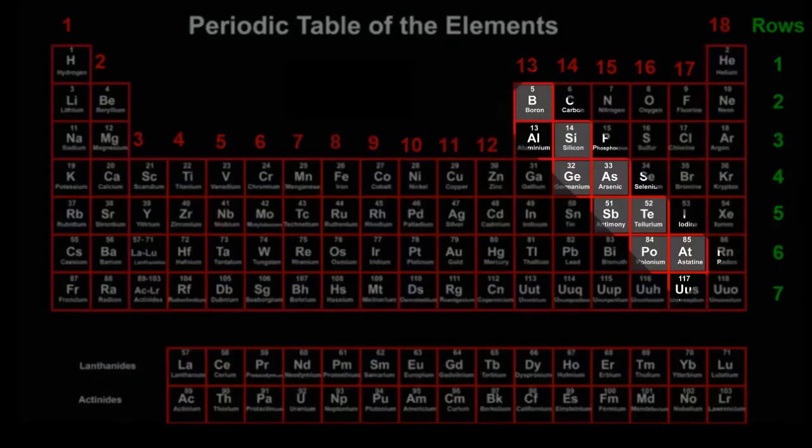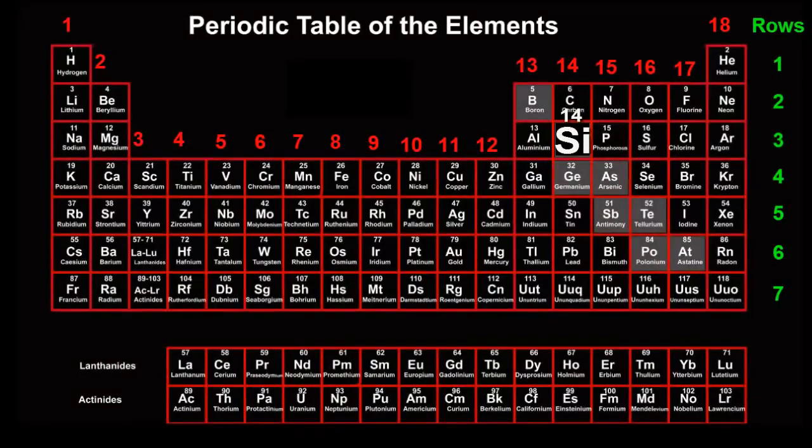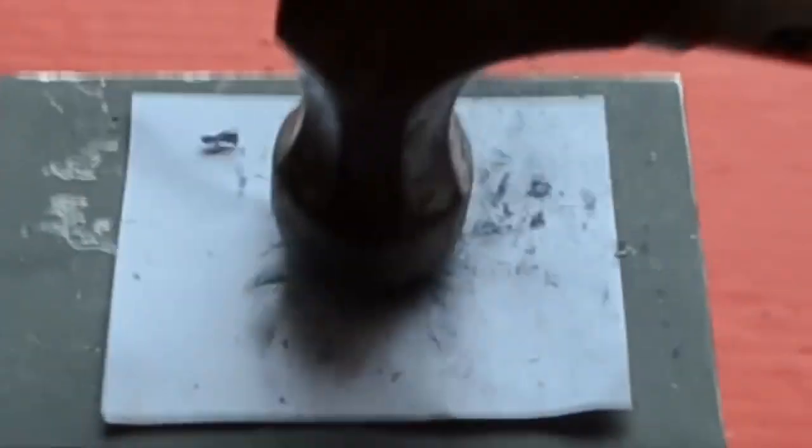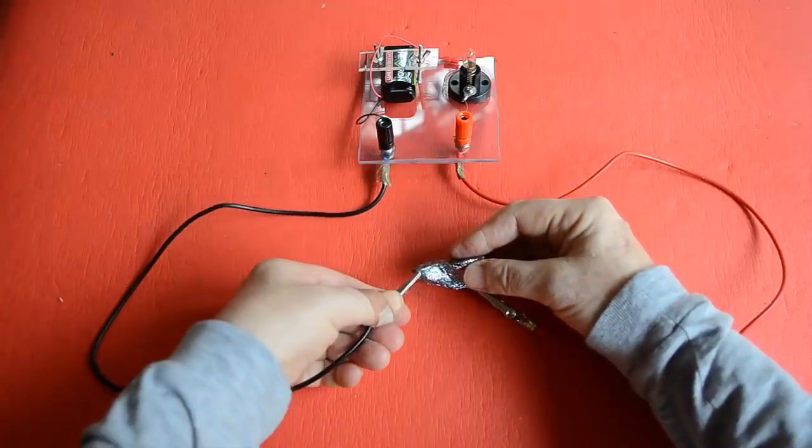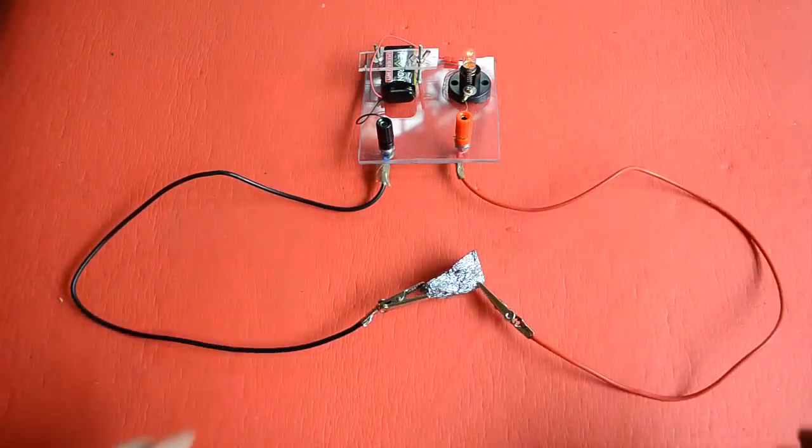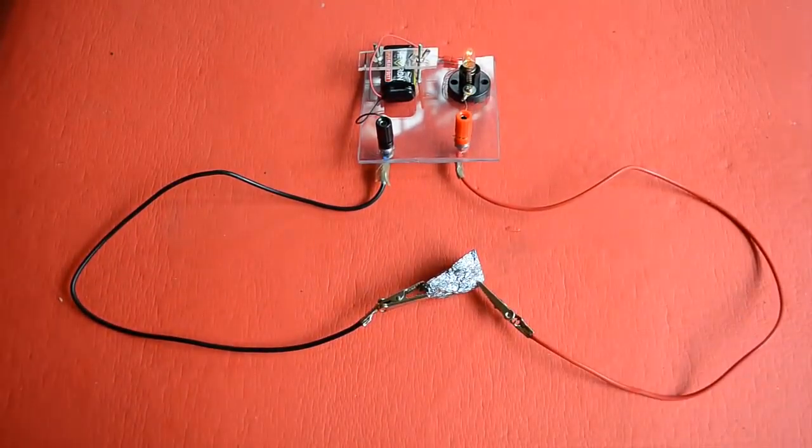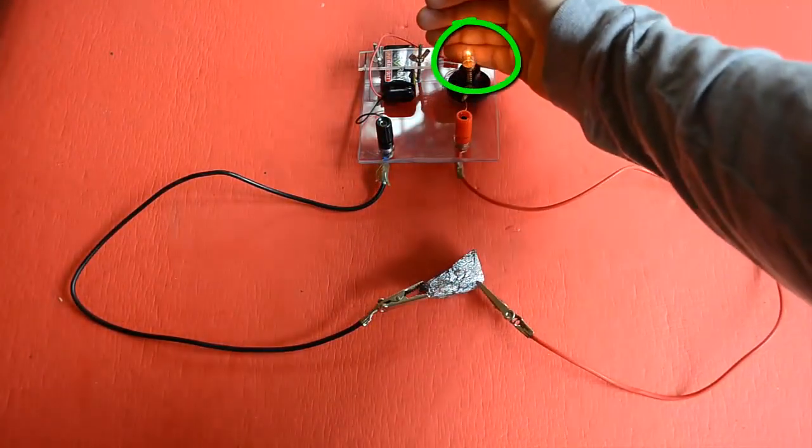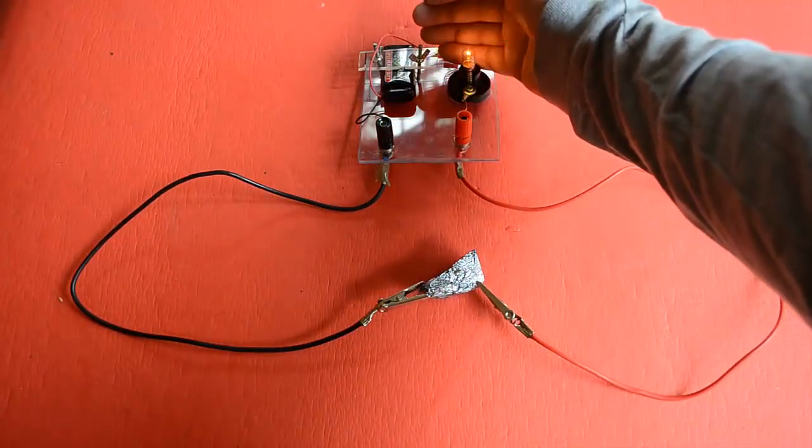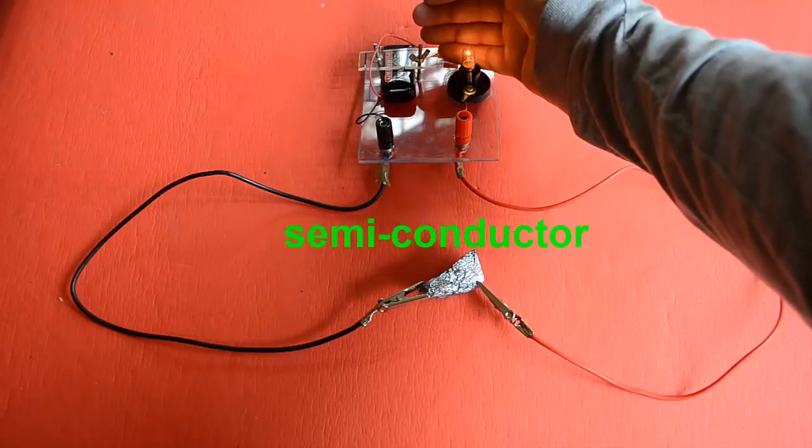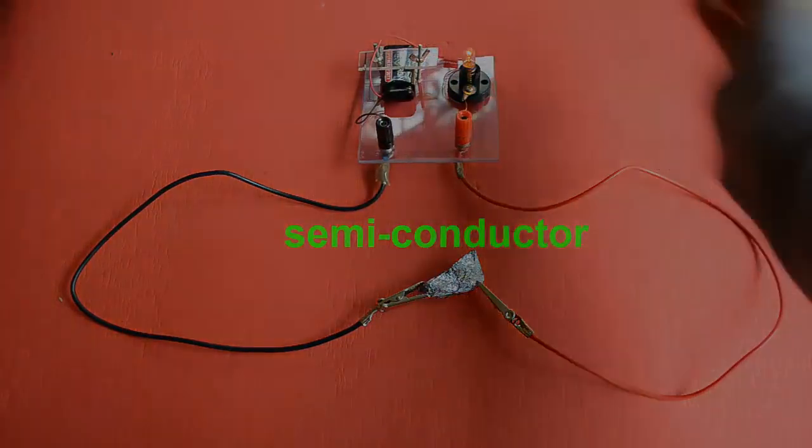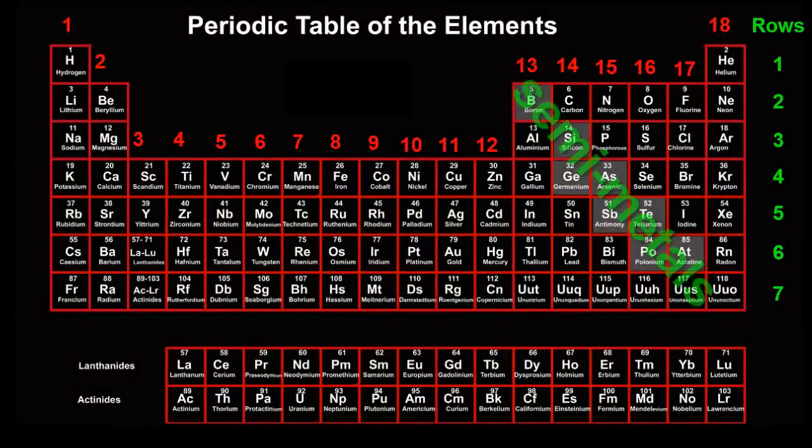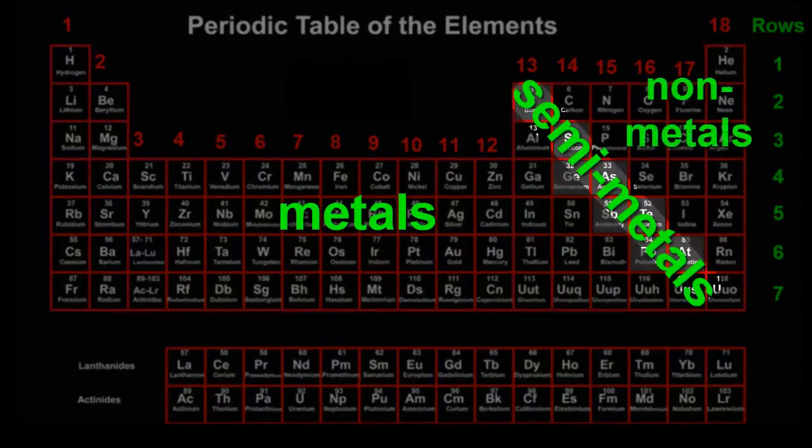What about the elements inside the diagonal band? Let's take a look at silicon. It looks shiny like a metal, but if you whack it with a hammer, it breaks into bits. So it's brittle like a non-metal. And the dull glow of the bulb tells us that it conducts electricity more than a non-metal, but not as much as a metal. And this gives it the name of semi-conductor. These elements are also called semi-metals, because they have properties that are in between metals and non-metals.